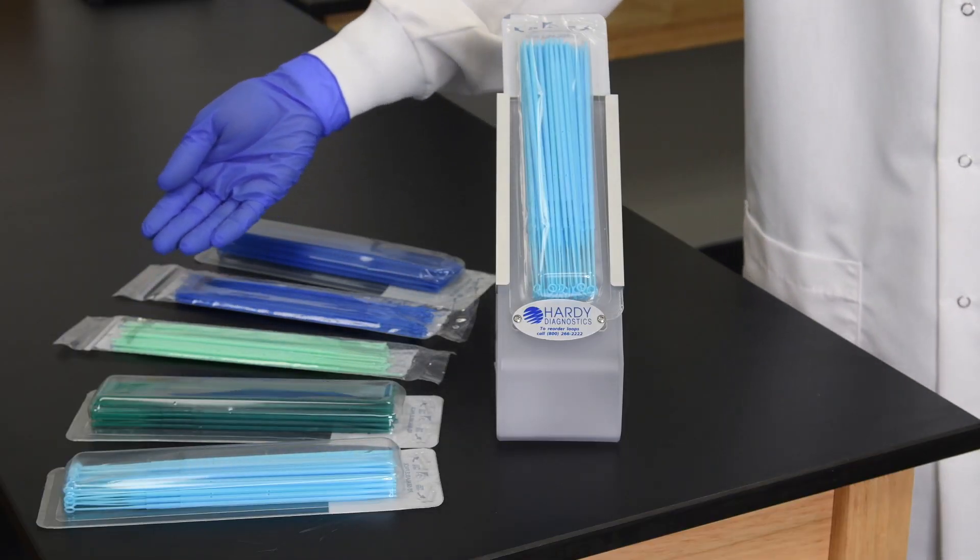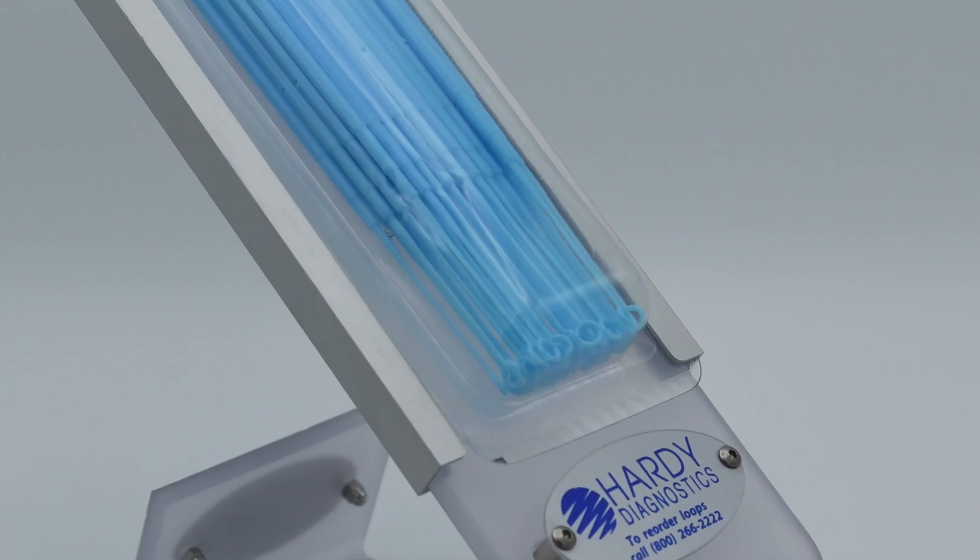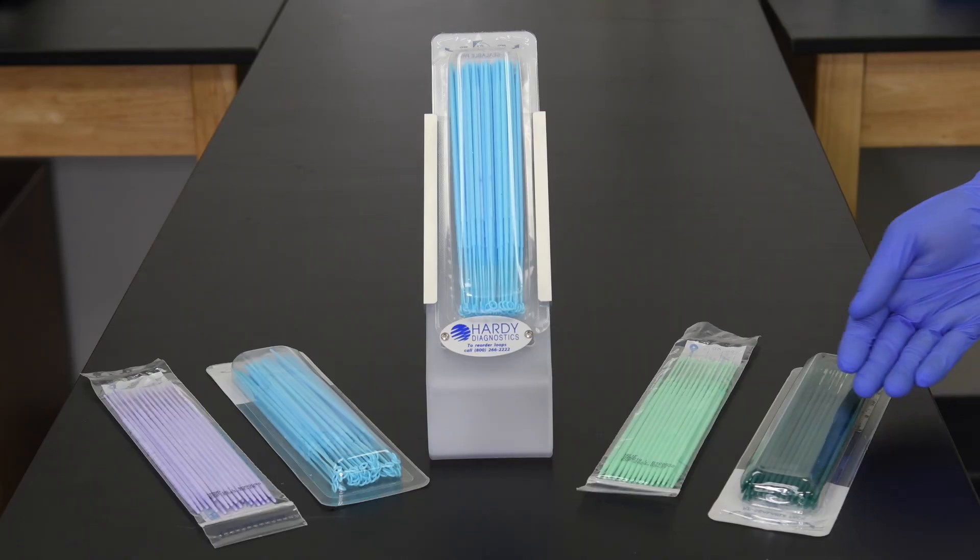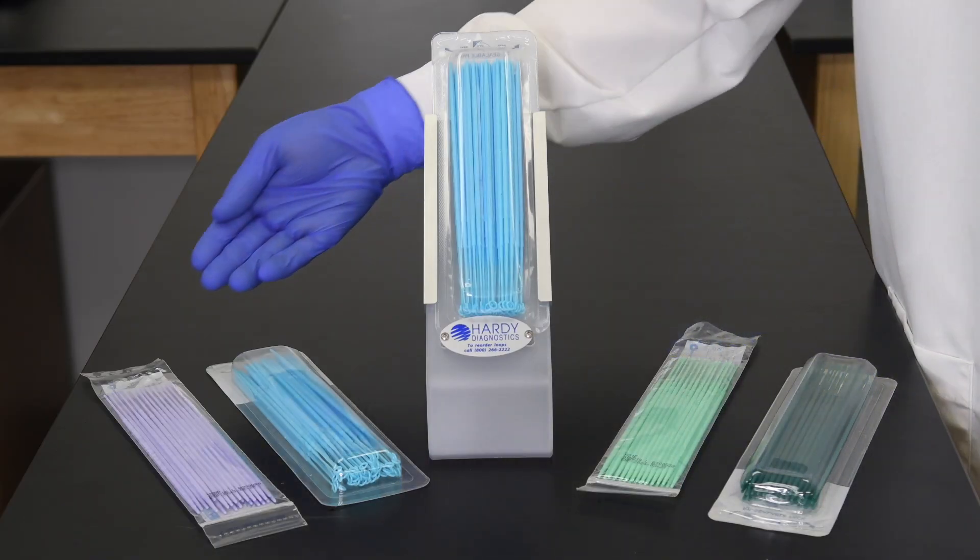The loops come in two sizes of calibration, 1 µL and 10 µL. Loops are available as rigid or flexible, as are inoculating needles.